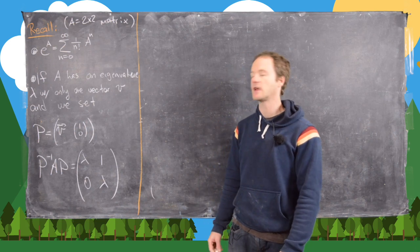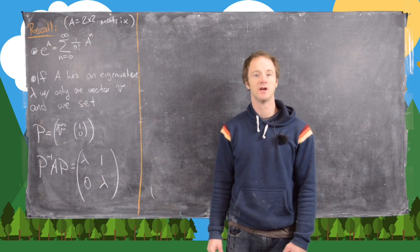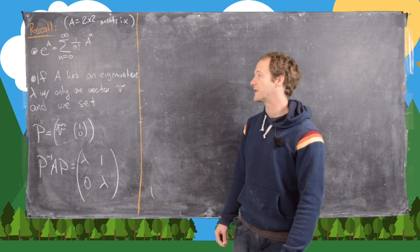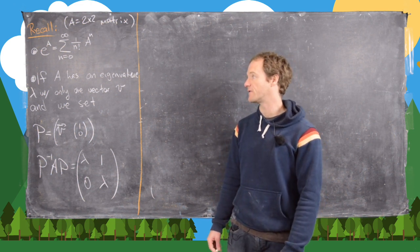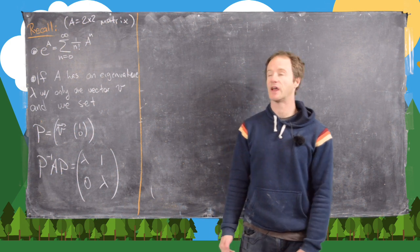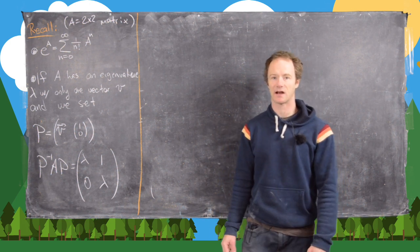Okay, in this video, we're going to continue looking at the notion of a matrix exponential. But in this case, we're going to look at the setting where our matrix only has a single eigenvalue and a single eigenvector. In other words, it's not a diagonalizable matrix.